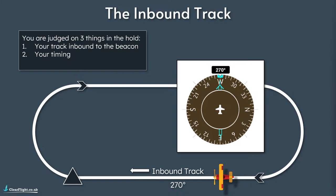And lastly, while you're doing all of that, you're judged on your altitude. Most of the time you're going to be flying level throughout the hold - you might get clearances to climb or descend, but most of the time you'll be flying level. There might be another airplane above you in the hold or one below you, so you need to be maintaining your altitude while you're flying around the hold.